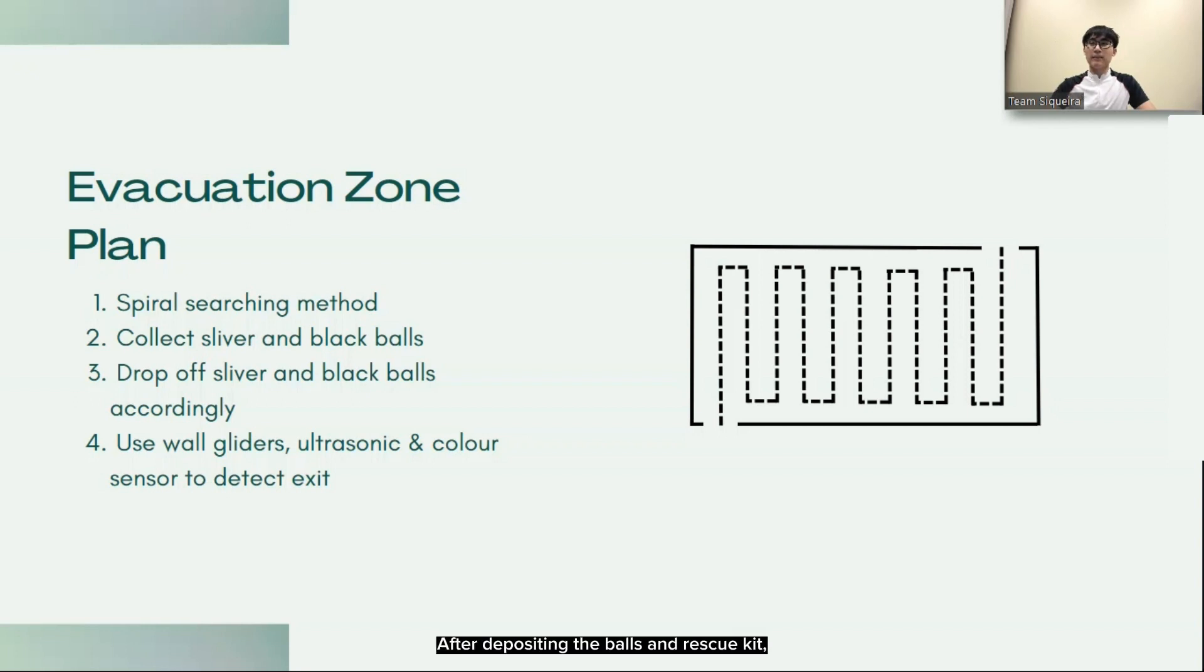After depositing the balls and rescue kit, the robot will glide along the wall to find the exit zone. Using ultrasonic sensor and color sensors, the robot can detect the exit zone and move completely out of the evacuation zone. This evacuation plan ensures that the robot efficiently navigates the evacuation zone and completes its missions.